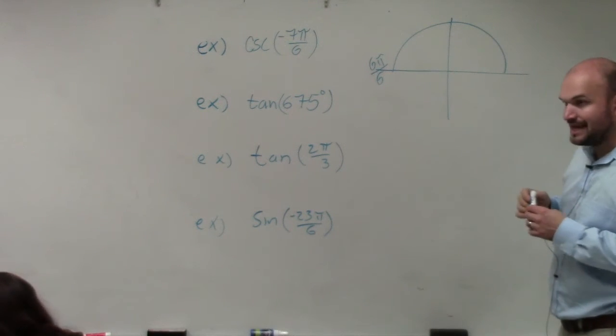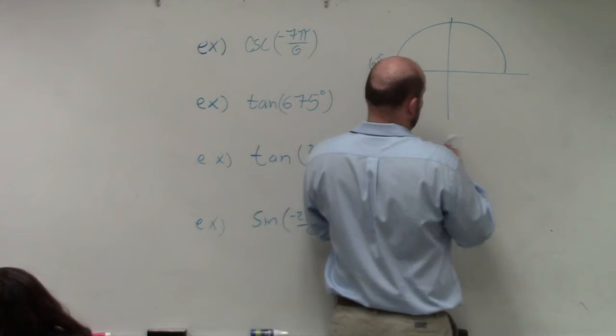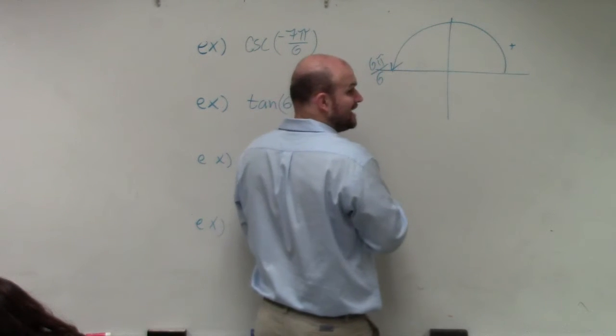However, we're going in the negative direction, and we need to do an extra π over 6. So this would be, if I was going to do an angle that would be positive, but I'm going to do a negative angle.